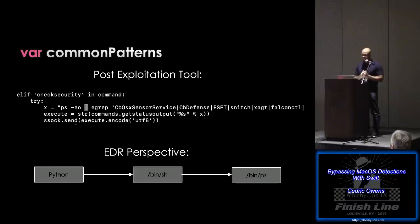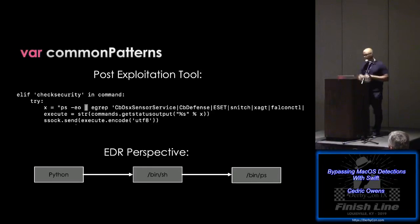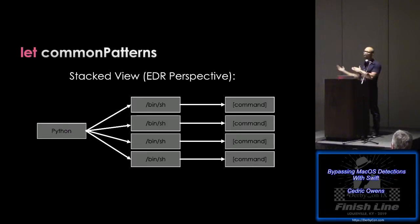Here's an example from my tool MacShell. One operator command was 'check security.' When entered, it gets sent to the client and is converted to a ps command, grepping for EDR products or antivirus, then sends results back so the operator knows what AV or EDR products are running. From an EDR perspective, this fits the pattern: Python spawning /bin/sh, which spawns ps. Over time you see the same thing — each command causes a new /bin/sh instance spawned.